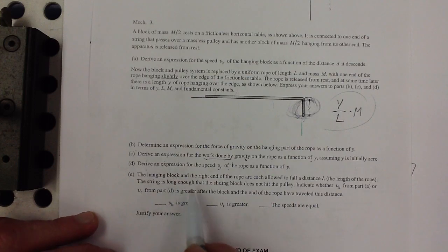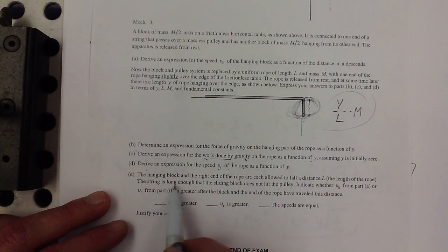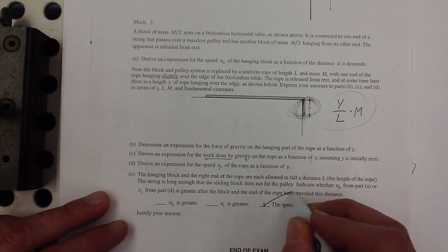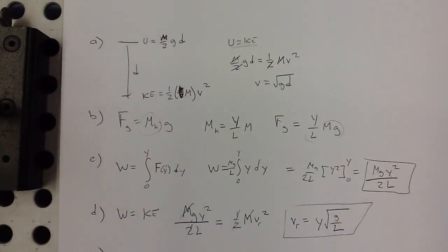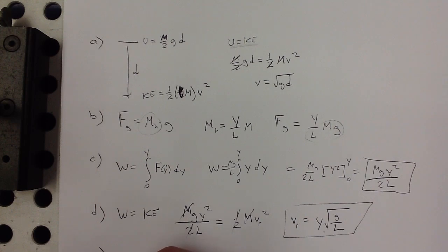And then last, the hanging block and the right end of the rope are each allowed to fall distance l, which is the whole length of the rope. The string's long enough that the sliding block does not hit the pulley. Indicate whether the velocities from part a or d are greater after the block and the end of the rope have traveled this distance. Well, they are equal to each other, and I'll show you why. There's a couple ways to do this. One of them is to actually, since we have velocity as a function of y, we could just plug it in and find that velocity.